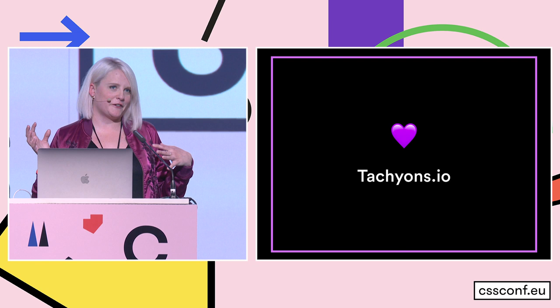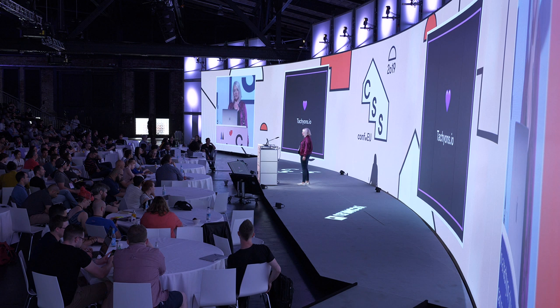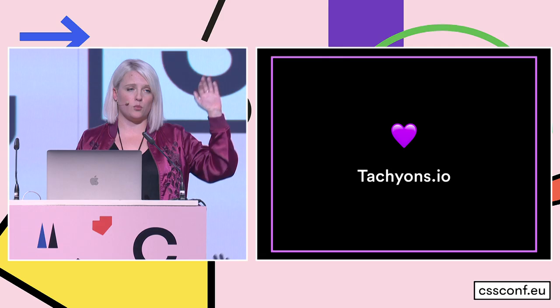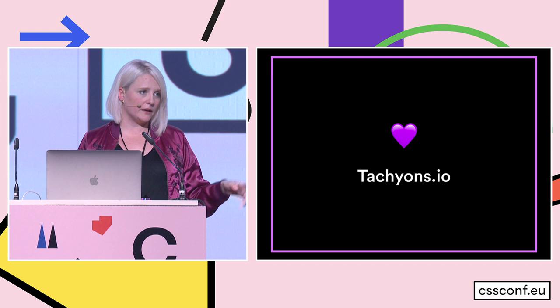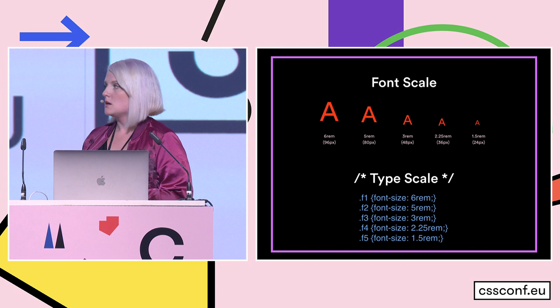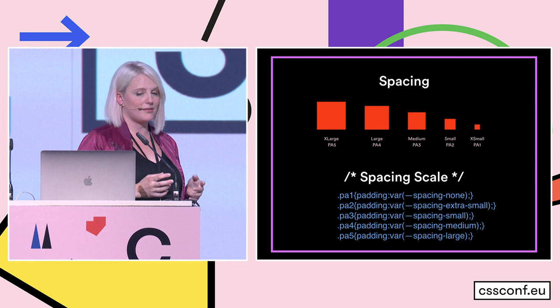I'm not here to sell Tachyons — I don't work for Tachyons — but I do work with Tachyons and find it to be a really great library in production. I'd recommend checking out their docs because they're really, really helpful. Everything is visually shown, with examples of how to write markup, what each class does, and visual layout examples. One of the awesome things about Tachyons is it's a scale-based system — there's a font scale, a type scale, padding scale, margin scale. Everything breaks down into design system scale thinking.